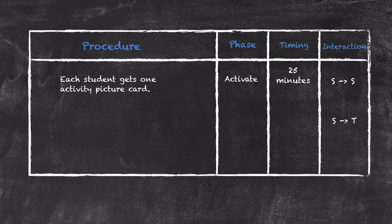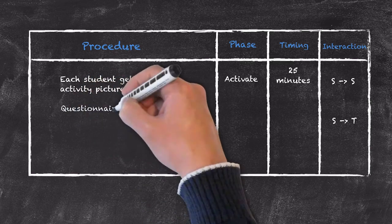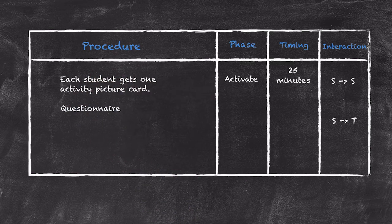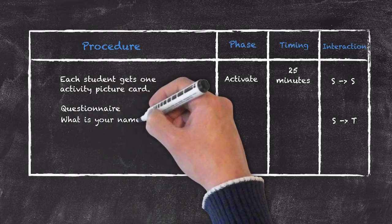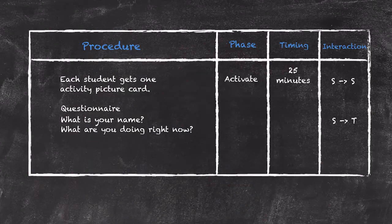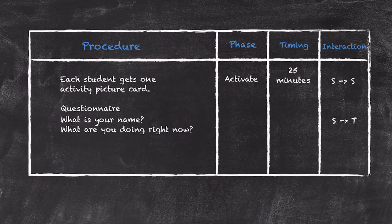They're also going to get a questionnaire, and on that questionnaire there's going to be two questions that they're going to ask each other: what is your name, and what are you doing right now? And each student will get up and it will be a mill drill process where they find out the person's name and what they're doing right now.